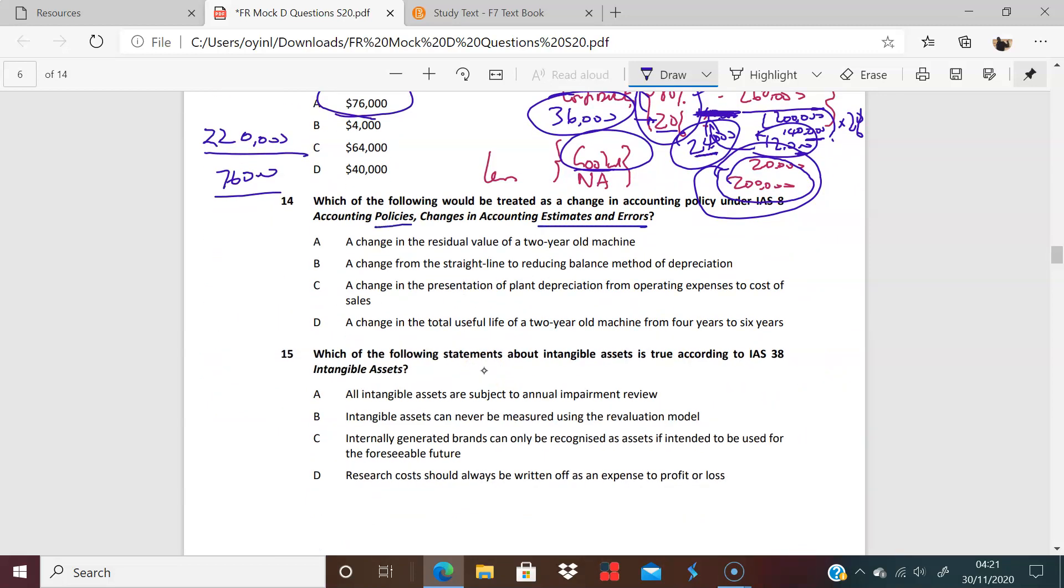14, change in accounting policies, estimates, errors. So all of these are, well, when I say all of these, residual value, two-year machine, straight-line method, these are just estimations. Presentation. I know it sounds a bit silly, but presentation is unique in that it is classification, and that is a change in policy. Think about the way we would read documents or read financial statements if suddenly you move operating expenses to cost of sales. Gross profit margins. You're almost crossing categories, aren't you? Gross profit margin, net profit margin issue there. So the answer is C, change of policy. Yeah, really important that. Useful life all here are all estimations. These are all estimations. And so we are prospective. We only look forward with estimations. We look forward, but we look back with policies and errors. We look back with policies and errors.